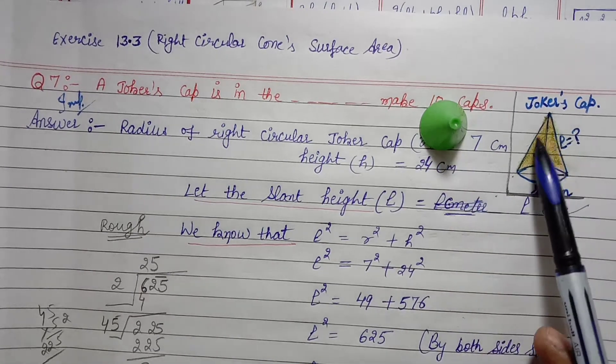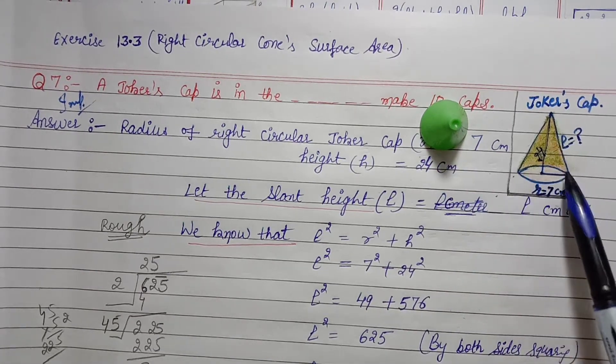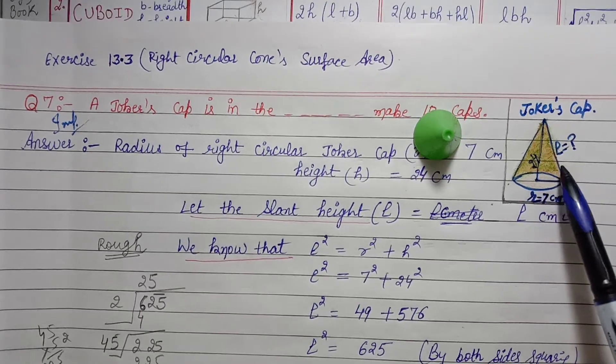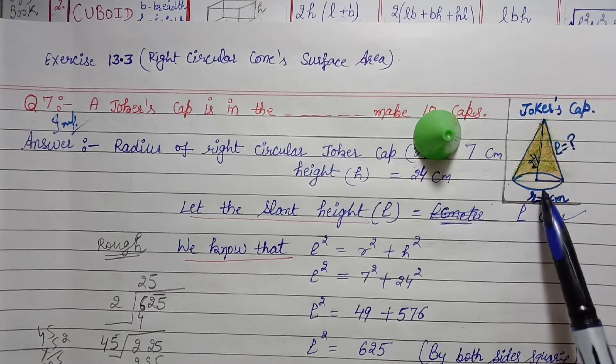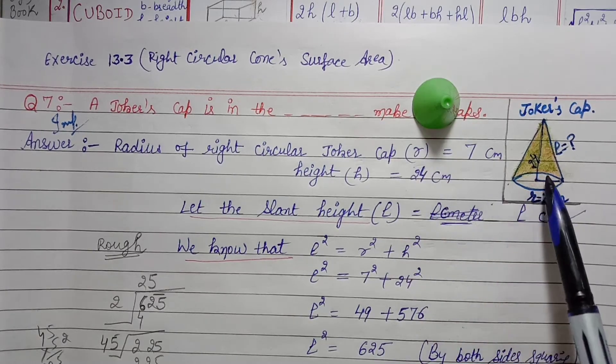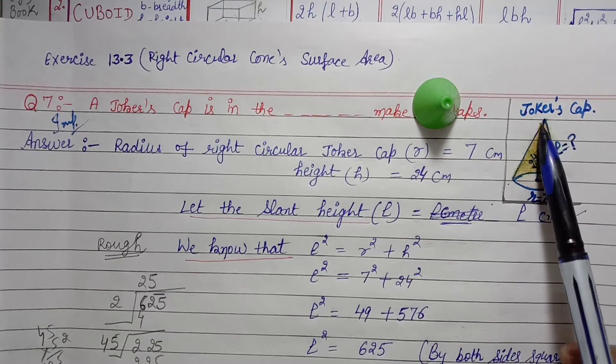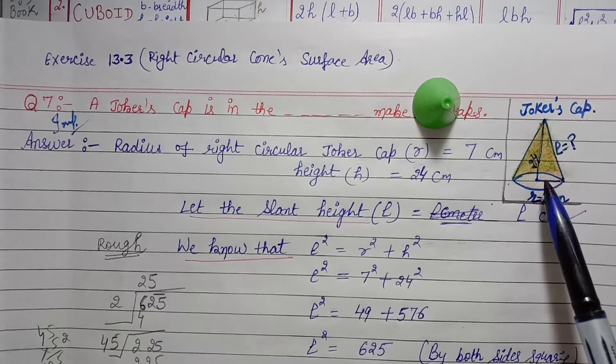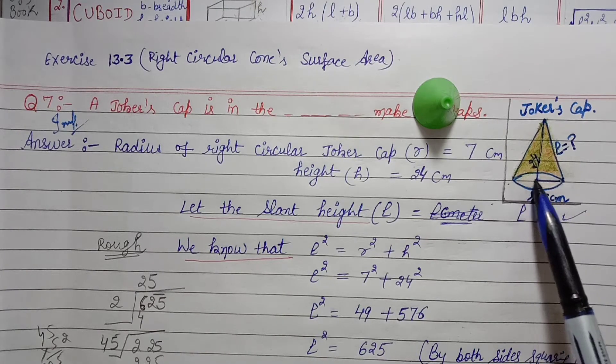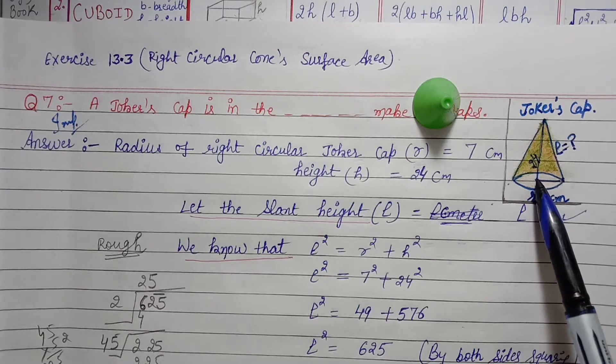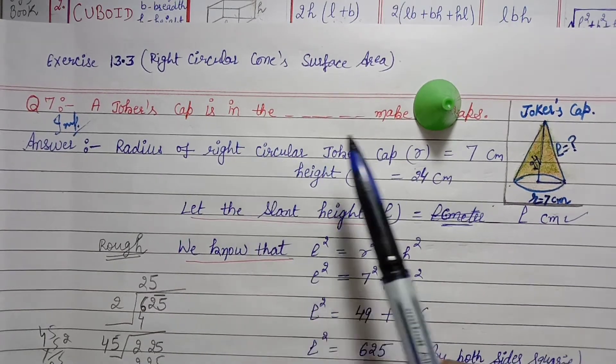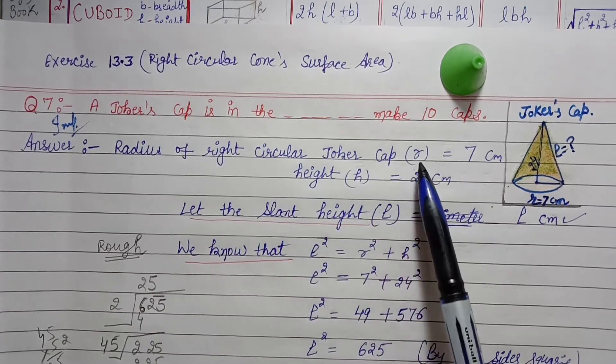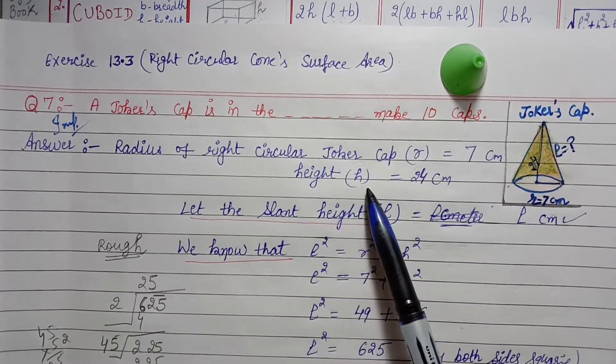Simple question. You can imagine the joker's cap - you've seen them before. I'll draw it in my notes. The joker's cap has a radius of 7 cm and height is 24 cm, height perpendicular to vertex, perpendicular on diameter at the center point.